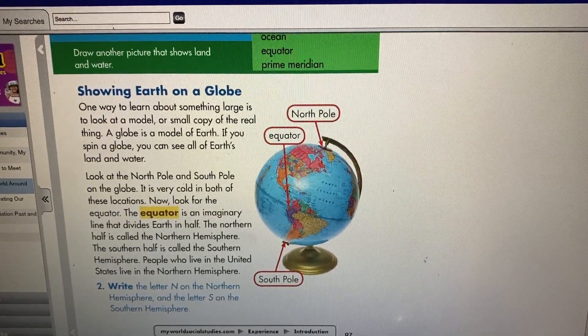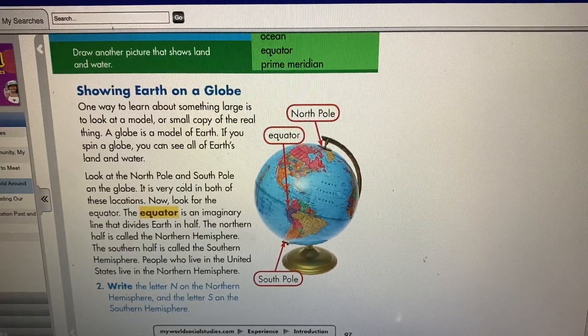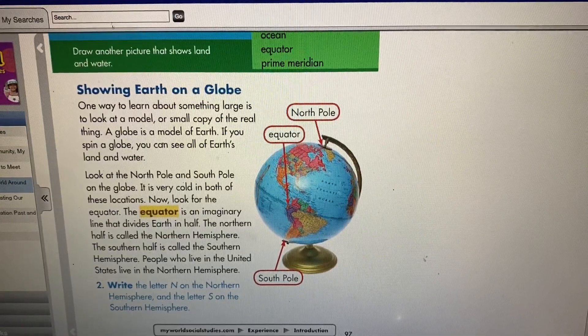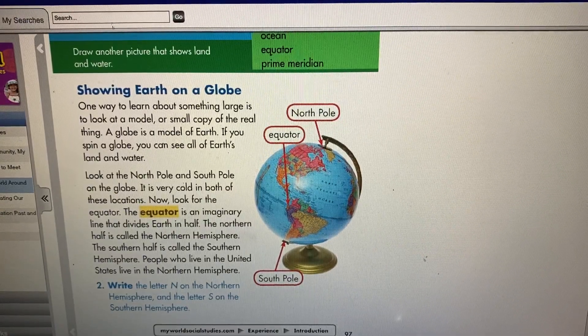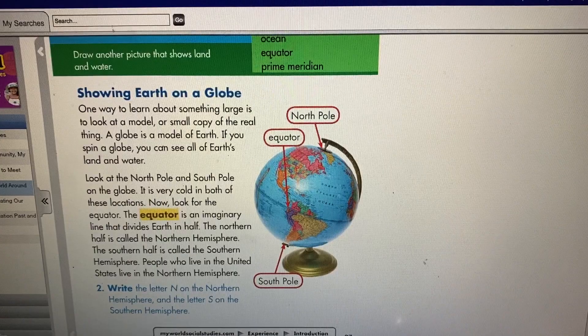Look at the North Pole and South Pole on the globe. It is very cold in both of these locations. Now look at the equator. The equator is an imaginary line that divides Earth in half.